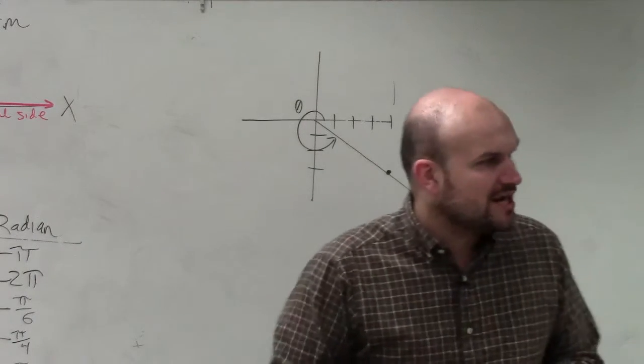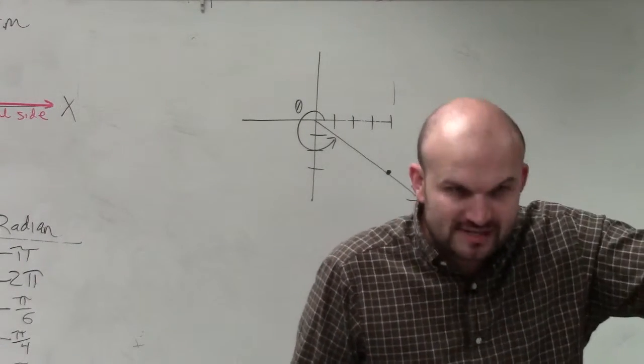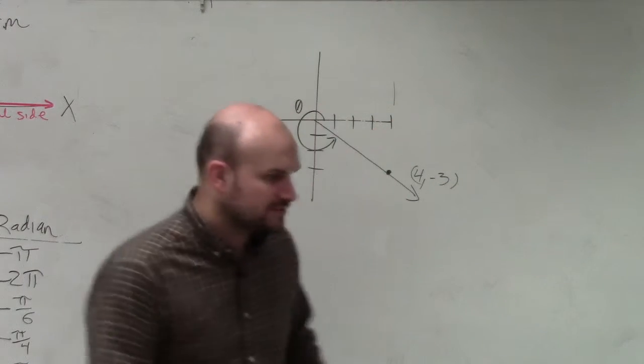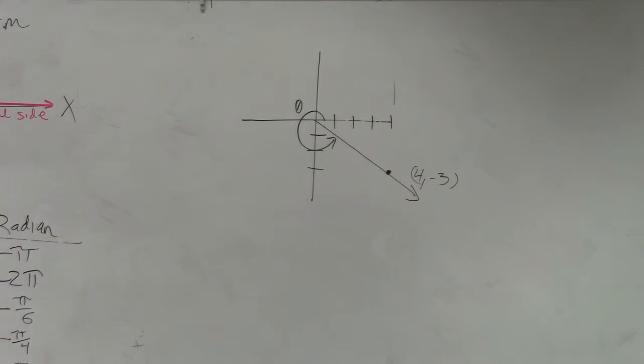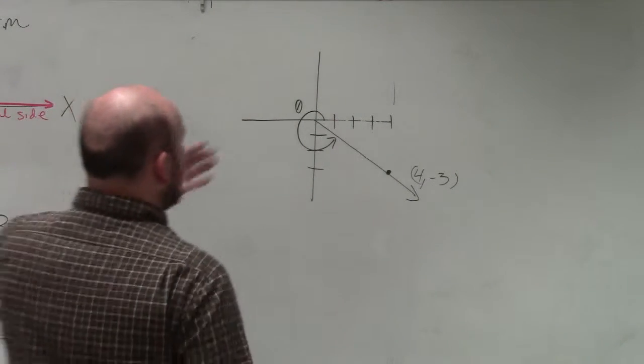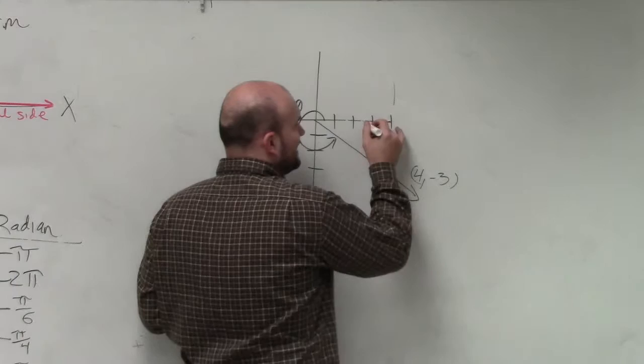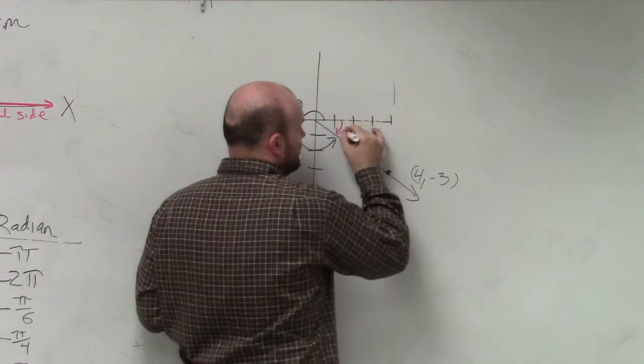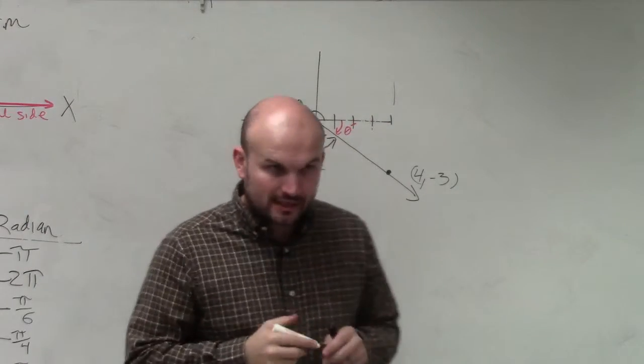However, there was another type of angle we talked about, which was called the reference angle. And if you remember the reference angle, we spent time creating reference angles because what was important about the reference angle was the reference angle was the acute positive angle between the x-axis and the terminal side. And we called that theta prime, which was the reference angle.